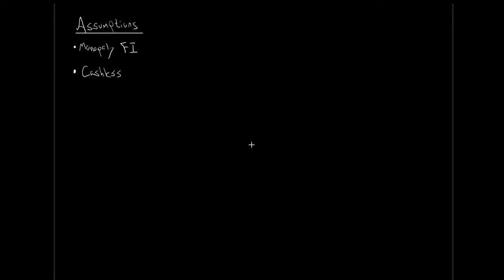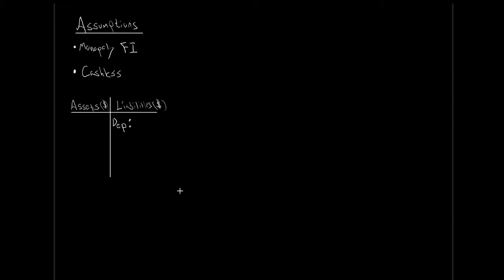To evaluate this, we look at the Monopoly Bank's balance sheet, or T-table. On the left are the bank's assets (in dollars); on the right are the bank's liabilities. Liabilities are what the bank owes to others — deposits, for instance, are a liability because you could walk in and demand your money back. The two sides must always balance.